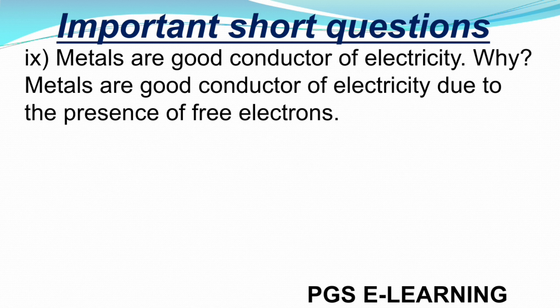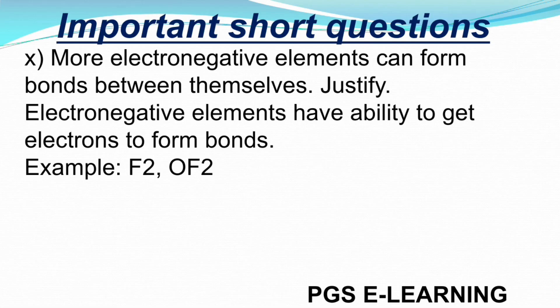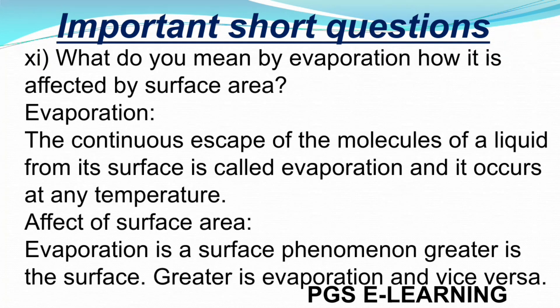Question 9: Metals are good conductors of electricity — why? Because metals are good conductors of electricity due to the presence of free electrons. Question 10: More electronegative elements can form bonds between themselves — justify. Electronegative elements have the ability to attract electrons to form bonds, for example F2 and OF2. Question 11: What do we mean by evaporation and how is it affected by surface area? Evaporation is the continuous escape of the molecules of a liquid from its surface; it occurs at any temperature. The greater the surface area, the greater the evaporation, and vice versa.